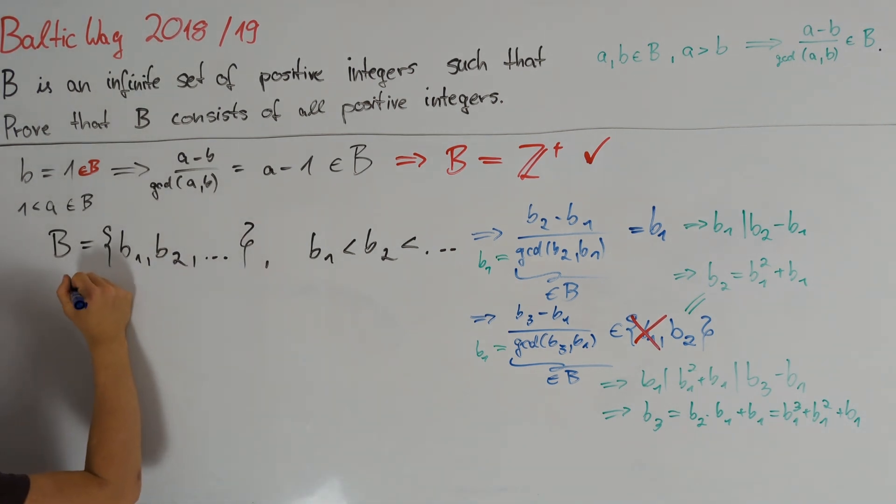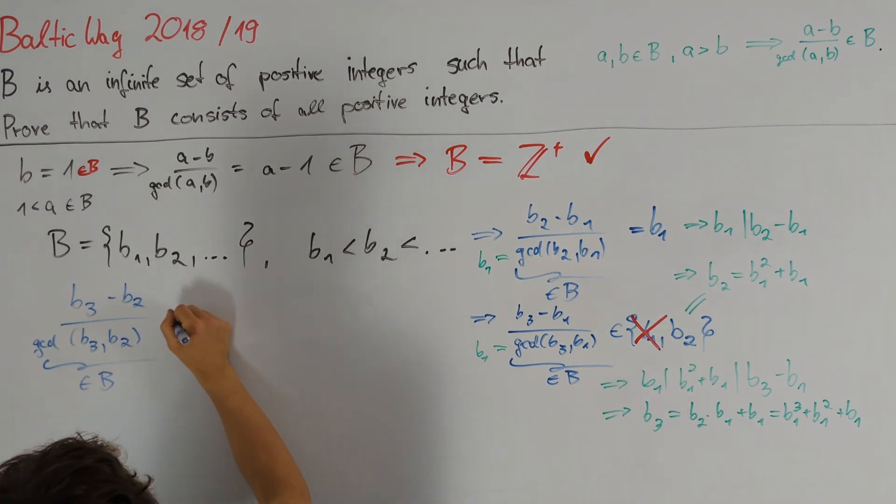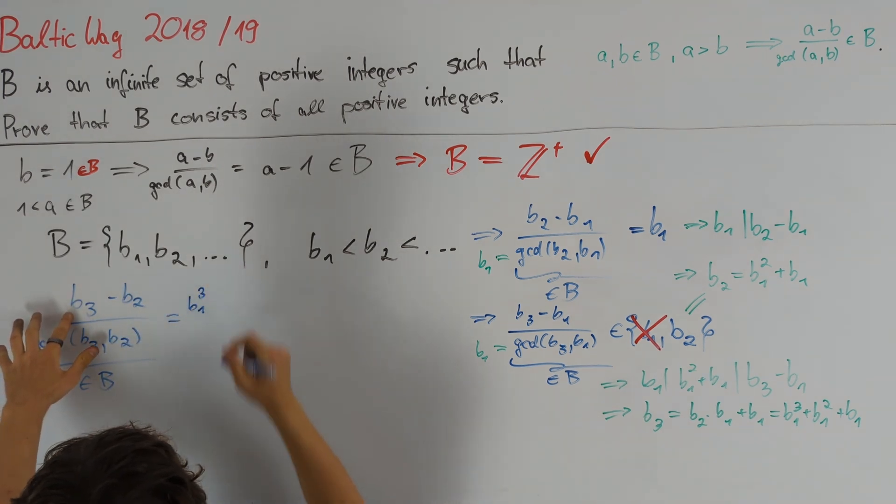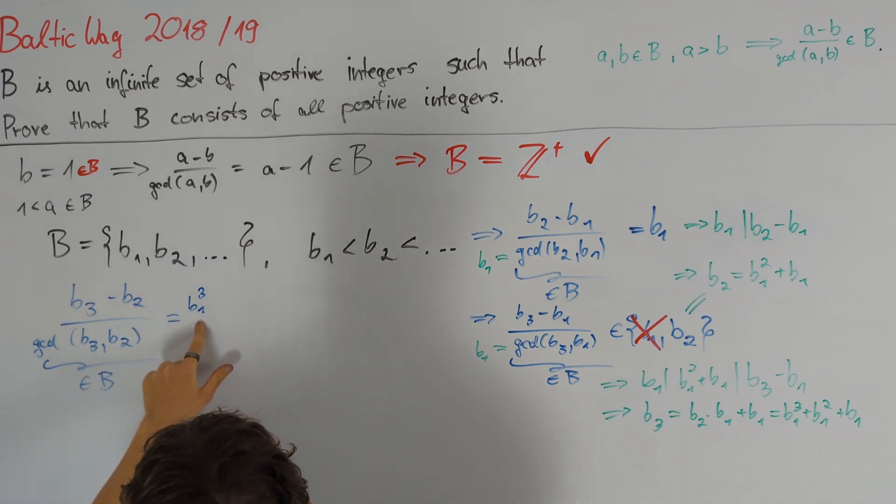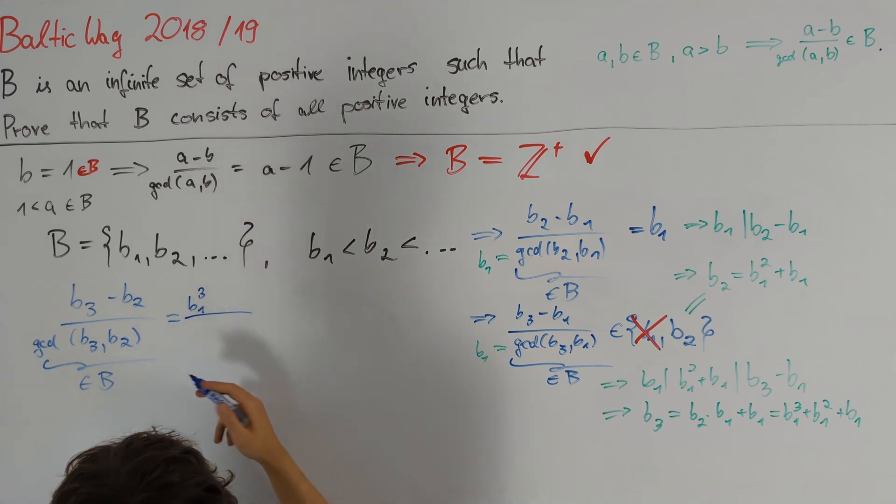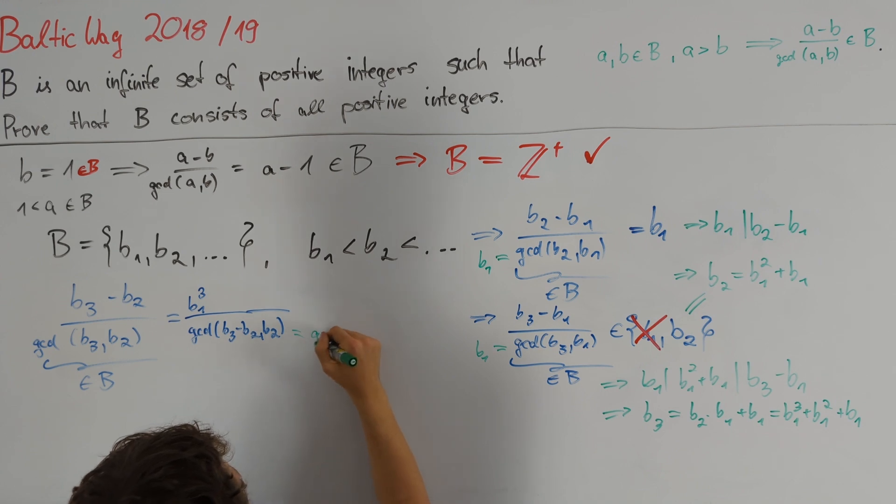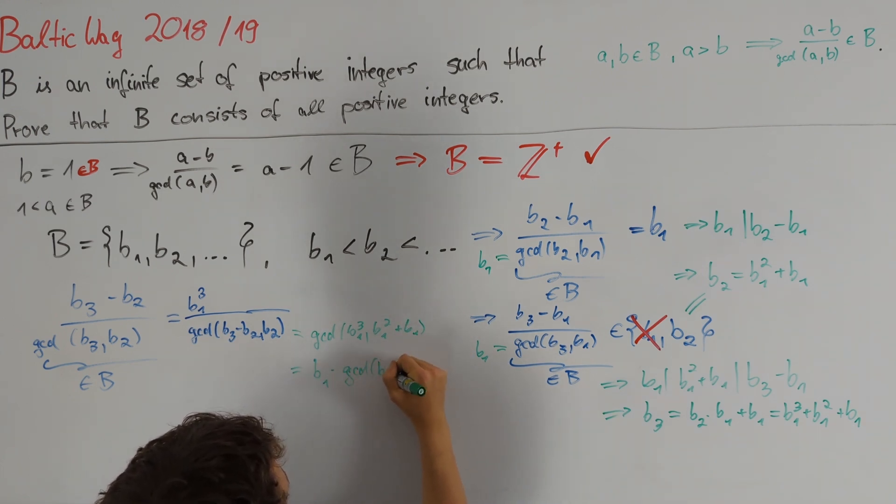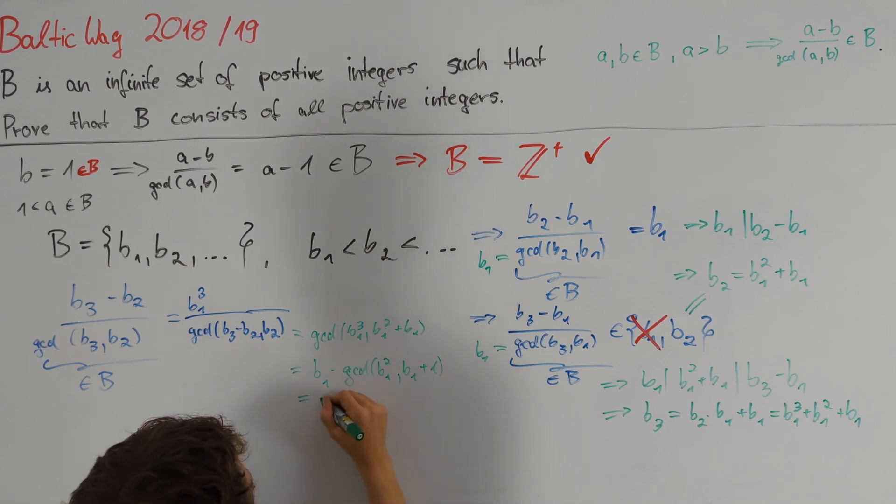So let's calculate the value of b3 minus b2 divided by the GCD, which we know lies in B. The numerator is just b1 cubed plus b1 squared plus b1 minus b1 squared minus b1, so in total just b1 cubed, which is nice. And we want to use this also for our denominator, because we can rewrite this as GCD of b3 minus b2 comma b2. And so this is just equal to the GCD of b1 cubed and b1 squared plus b1. Factoring out a b1, we are left with b1 squared and b1 plus 1 inside of the GCD. But since b1 is co-prime to b1 plus 1, the same holds true for b1 squared. And so this factor is equal to 1 and in total we get a b1. In total this fraction comes out at b1 squared.